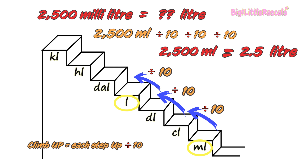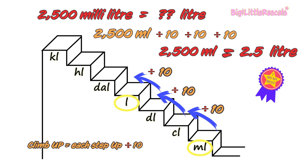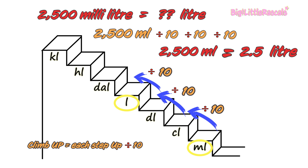So 2500 divided by 10, by 10, and by 10 gives you 2.5 liters. So 2500 milliliters equals 2.5 liters. Well done! If you're not familiar with decimal numbers, check out our fun learning videos about decimal numbers.